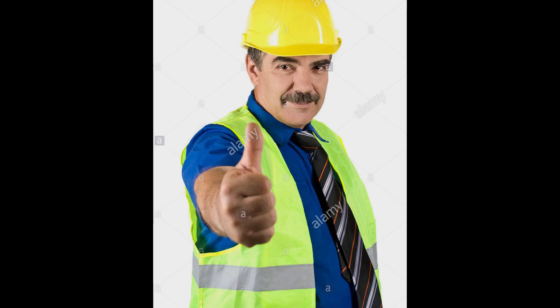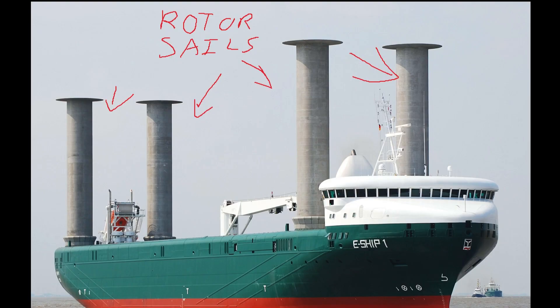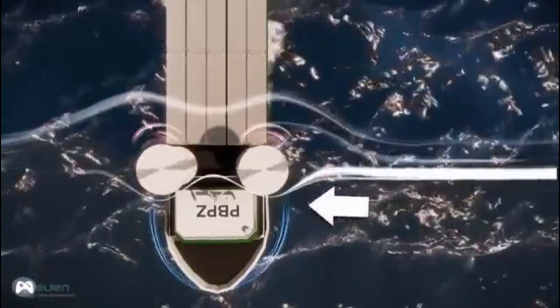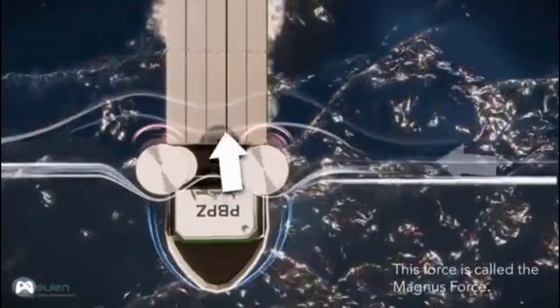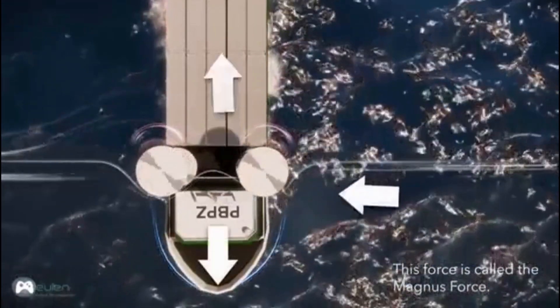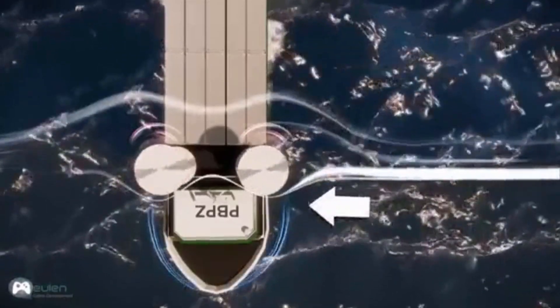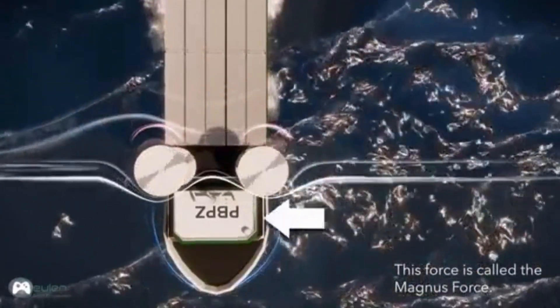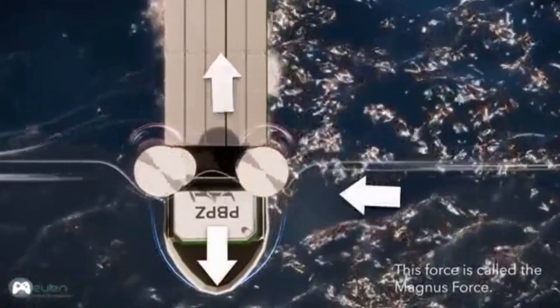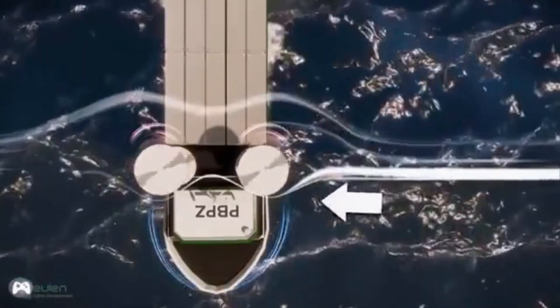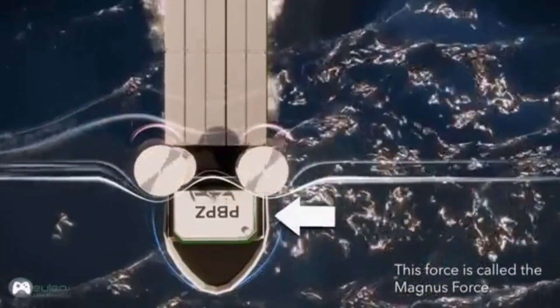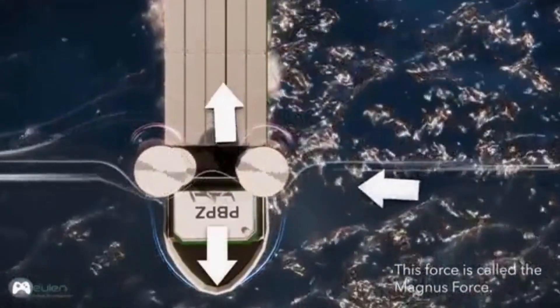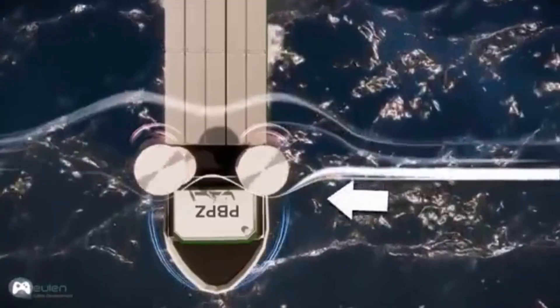You might be wondering, does the Magnus effect have any application outside of sports? The answer is kinda. Some engineers have designed rotor sails, which look like large rotating rods on the top of ships. These rotor sails are meant as a way of increasing fuel efficiency on modern ships. They aren't really strong enough to be the sole source of propulsion, so they're only used to increase fuel efficiency and provide a secondary source of acceleration.